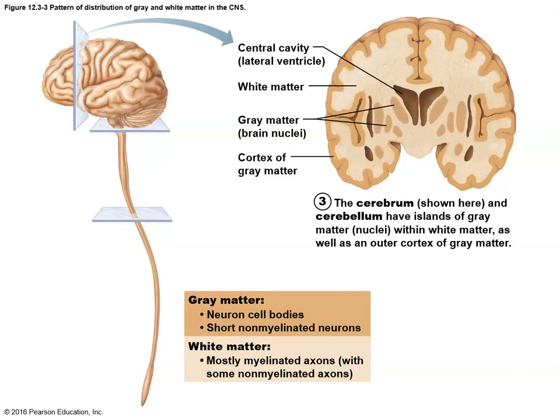Looking at the inside of the brain, gray matter is again on the outside and white matter on the inside, with some chunks of gray matter scattered through the middle. By and large, most gray matter is on the outside surface, which we call the cerebral cortex.